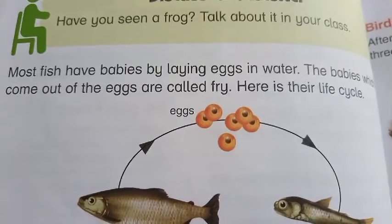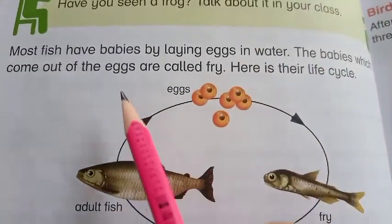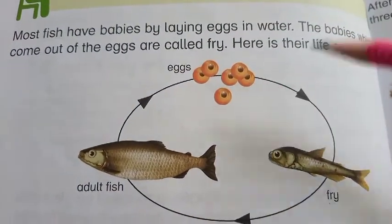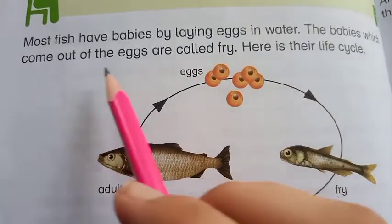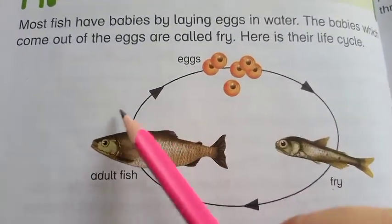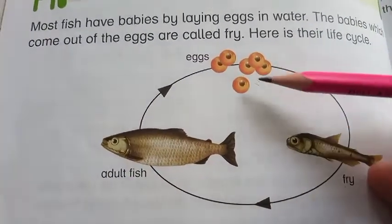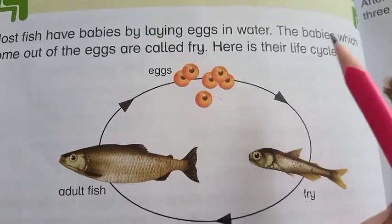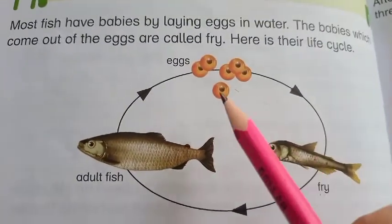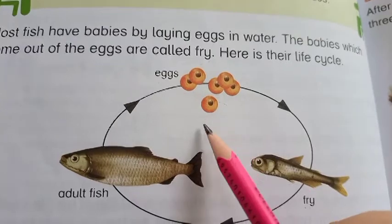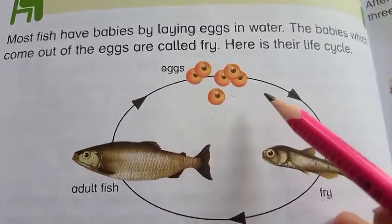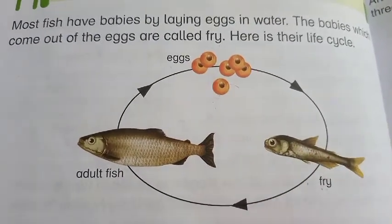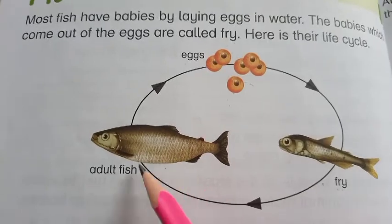Most fish have babies by laying eggs in water. The babies which come out of the eggs are called fry. Here is the fish's life cycle: the fish lays eggs, the fry hatch from the eggs, and then the fry grow into adult fish.